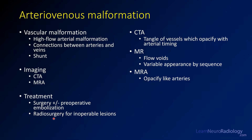Many times you may do radiosurgery for inoperable lesions. On CTA, you'll see a tangle of vessels opacified with arterial timing. On MR, the appearance is variable based on the sequence, but you'll see some flow voids, and vessels that are arterially opacified, particularly if you do any MRA that has a time-dependent component.